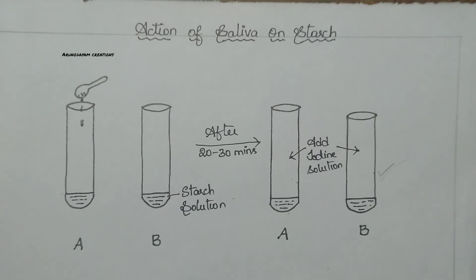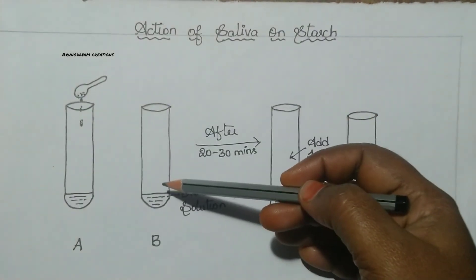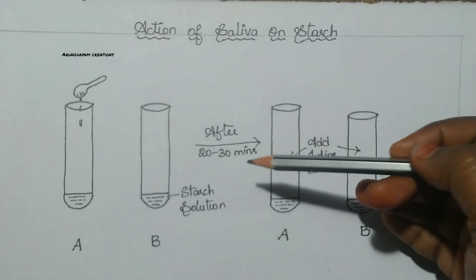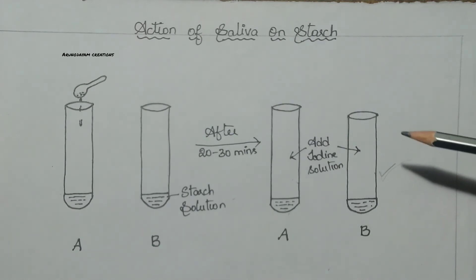Now, I am going to give you a homework question. If we add saliva to test tube B also, then after 20 to 30 minutes, what happens when we add iodine solution to test tube B? If you know the answer, if you understand the concept, please comment your answer here. Thank you so much for watching. Jai Hind.